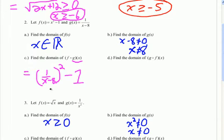Now, would there be any new restrictions on this? As you can see, we're still going to get that original restriction in the denominator — the denominator can't equal zero, and the number that would make it equal zero is again 8. So our domain here is that x can't equal 8, and we can put that in interval notation.